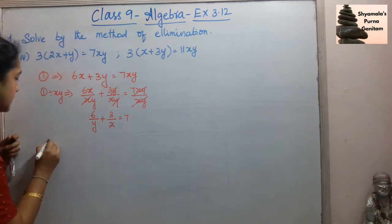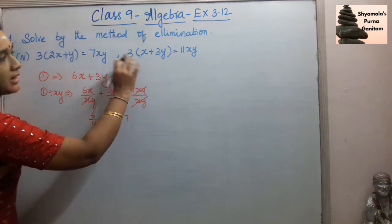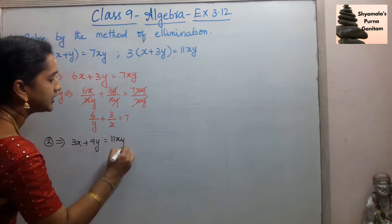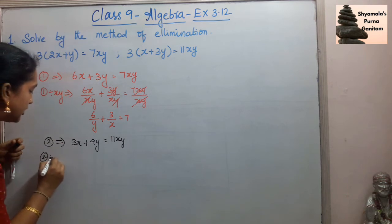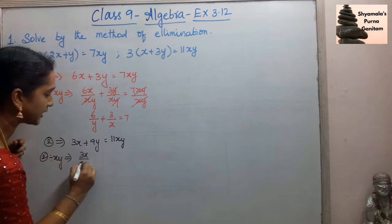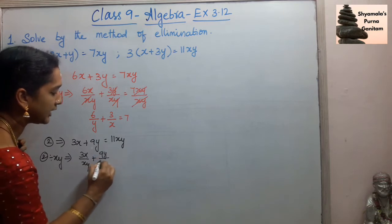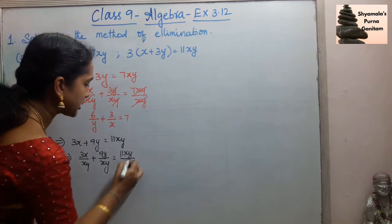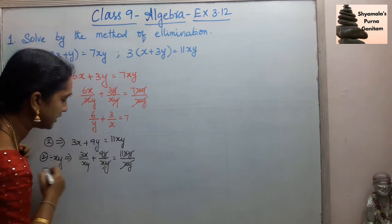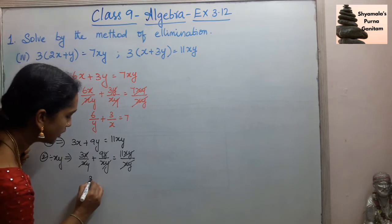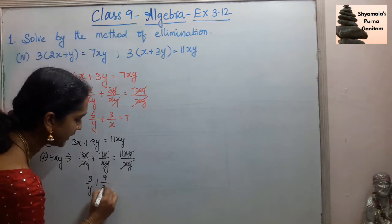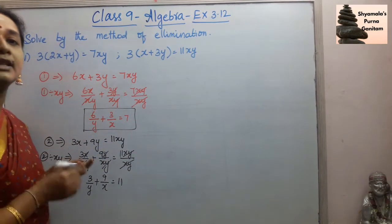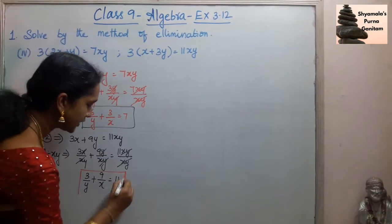The second equation is 3(x + 3y) = 11xy. Multiplying out gives 3x + 9y = 11xy. Dividing throughout by xy: 3x/xy + 9y/xy = 11xy/xy. The xy cancels, x and x cancel, y and y cancel, giving us 3/y + 9/x = 11. This is the simplified second equation.